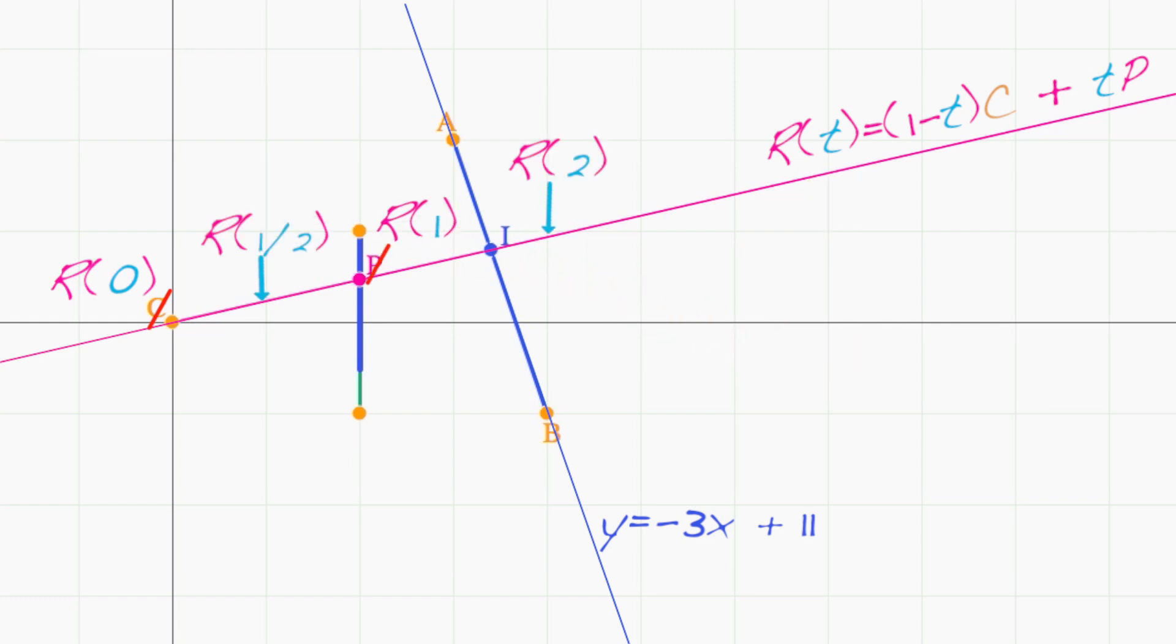The intersection point that we're after is one such point on the ray. So there must be some value of t, call it t star, such that i equals r of t star.